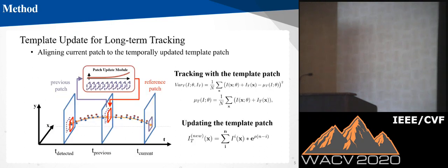We process long-term tracking using the temporally updated template patch. In this step, we first align the current events to the template with variance maximization, similar to the previous step. After that, we update the template again and use it for the next time step.